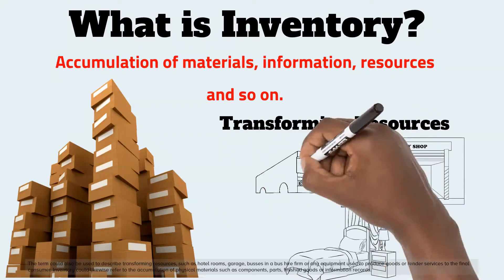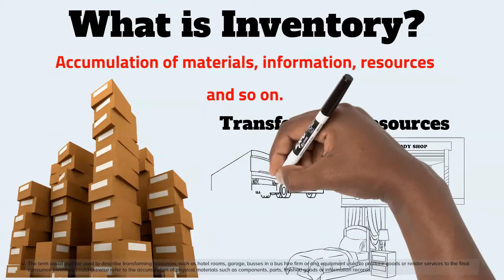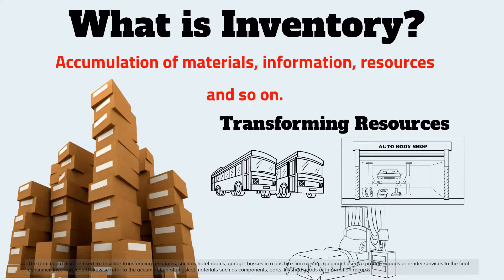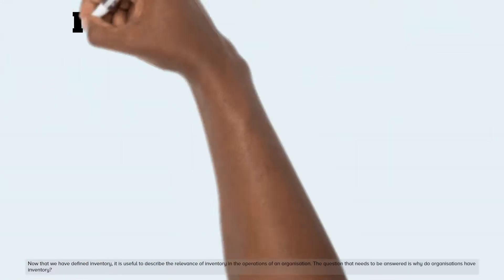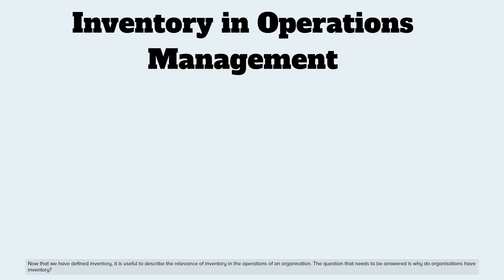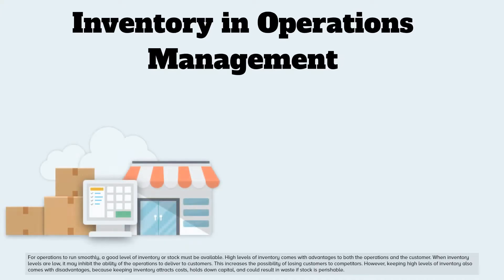Inventory could likewise refer to the accumulation of physical materials such as components, parts, finished goods, or information records. Now that we have defined inventory, it is useful to describe the relevance of inventory in the operations of an organization. The question that needs to be answered is: why do organizations have inventory?